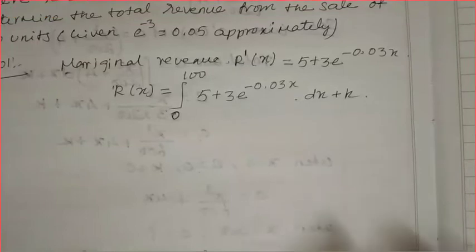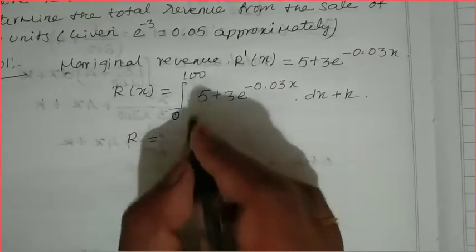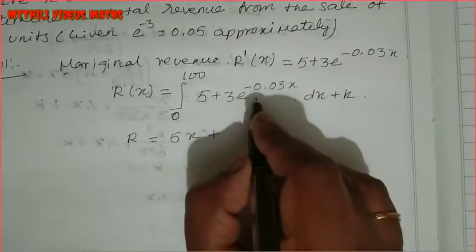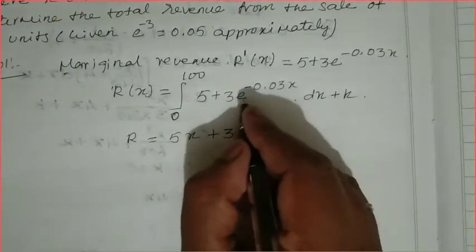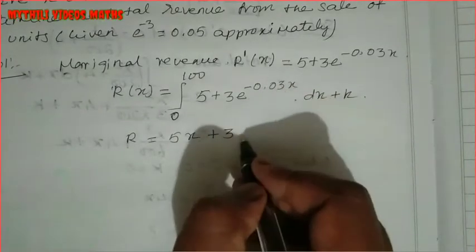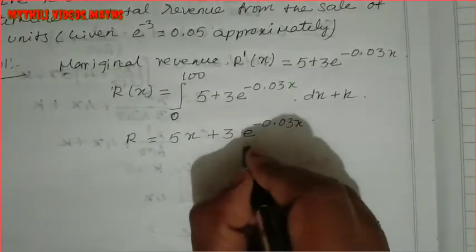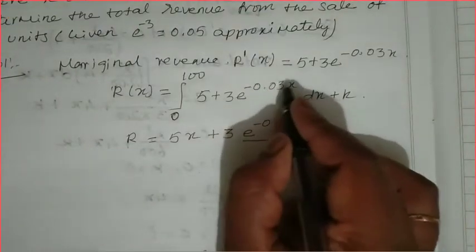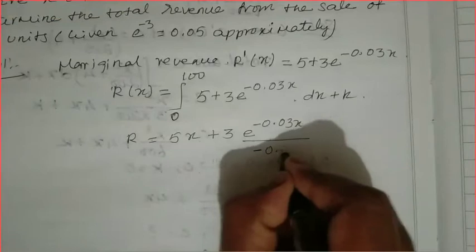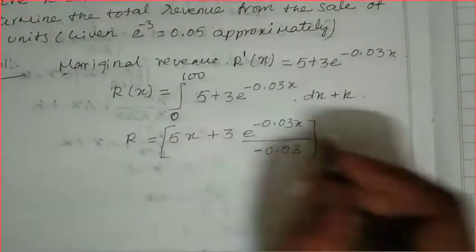Now we have to apply the limit. R equals first integrate. 5 integrates to 5x. Now write the limits — limits are going to be 0 to 100. So we have to apply 0 to 100. This limit is going to be 0 to 100, so we have to apply the limit.